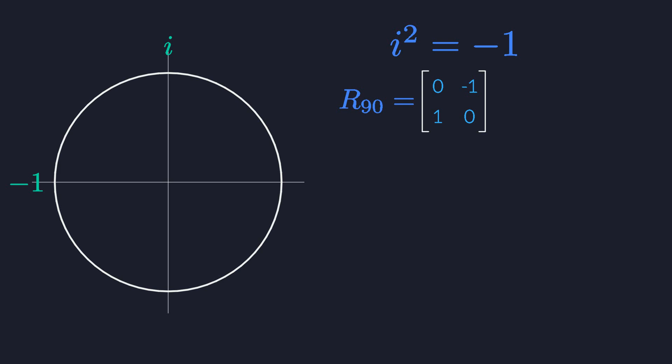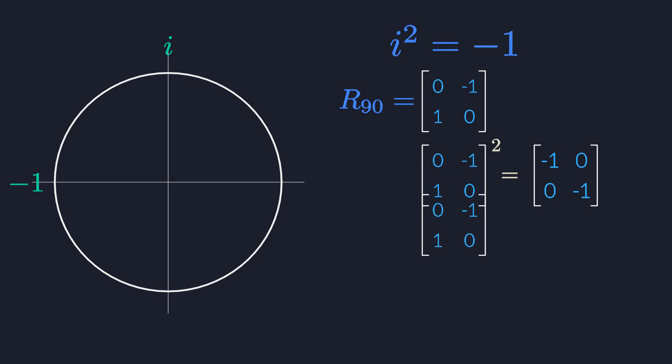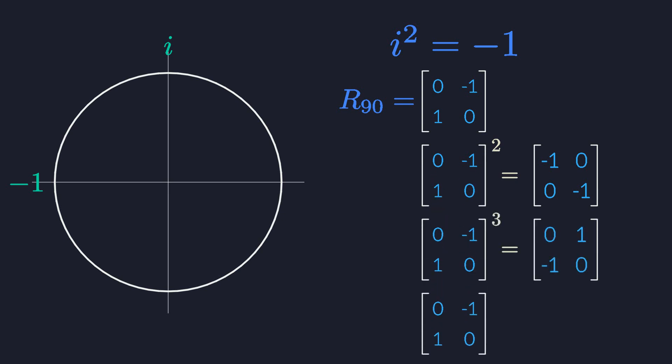You would get the same result if you started from a generic rotation matrix and filled in theta equals 90 degrees, or pi over 2. When you square this matrix, you get something that looks a lot like negative 1 — so even in matrix form, i still squares to minus 1. To obtain the other powers of i, we just raise R90 to those powers. The fourth power is the identity matrix, which represents the fact that i to the fourth equals 1.